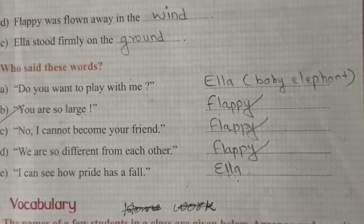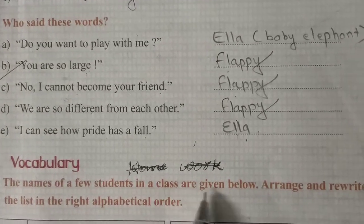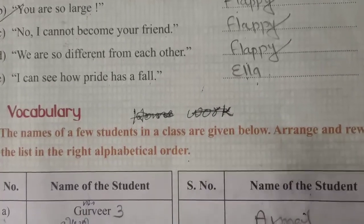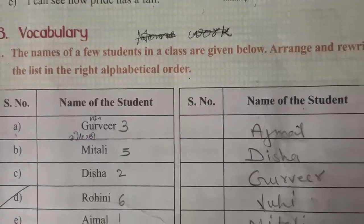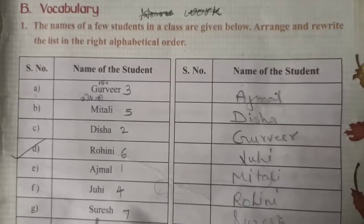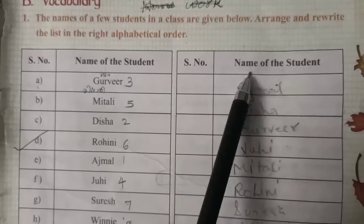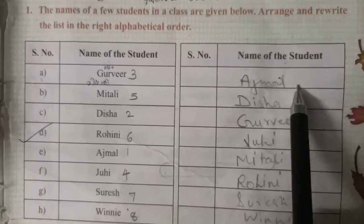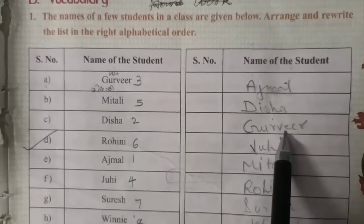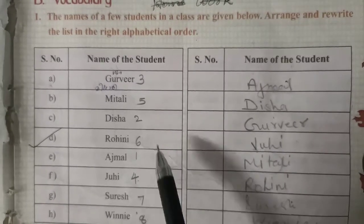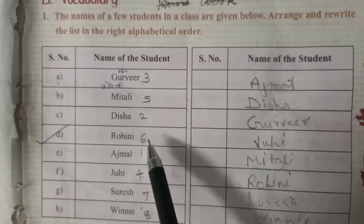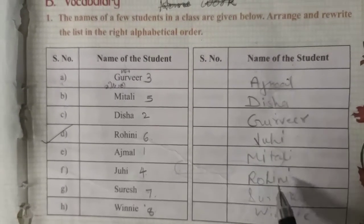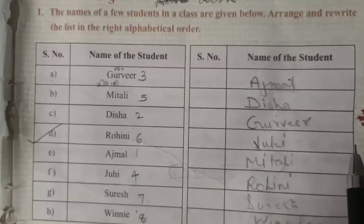Exercise C: the names of a few students in a class are given below. Arrange and rewrite the list in the right alphabetical order. You have to write the names in alphabetical order. The answers in order are: 1. Ajmal, 2. Disha, 3. Gurvir, 4. Juhi, 5. Mithili, 6. Roshni, 7. Suresh, 8. Vinni. You should write this in your book in the space given.